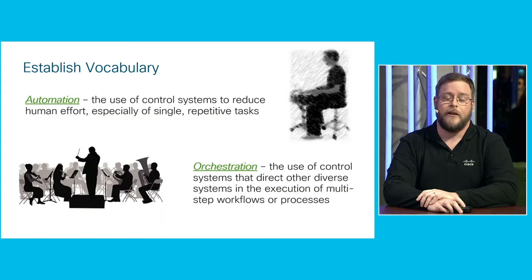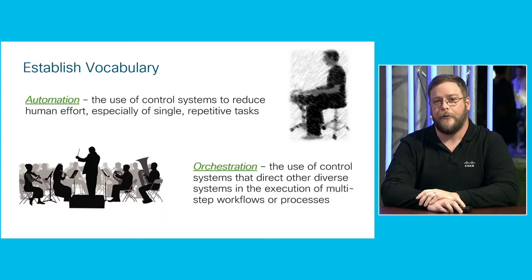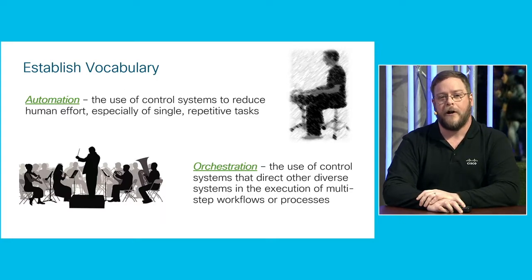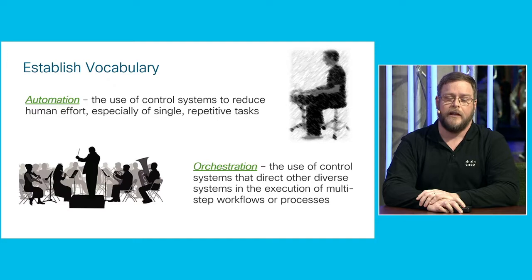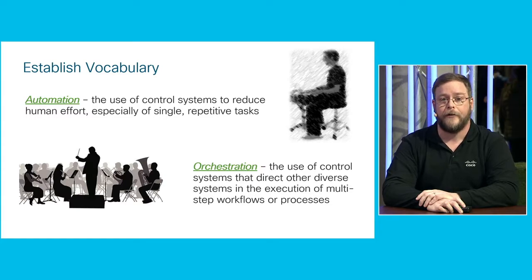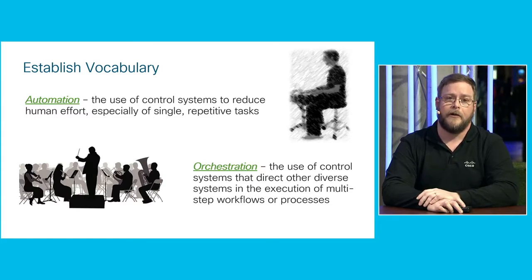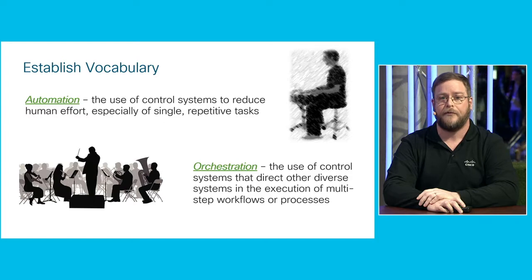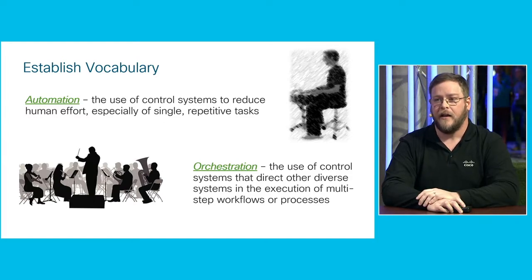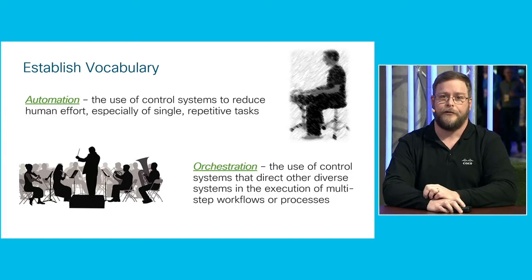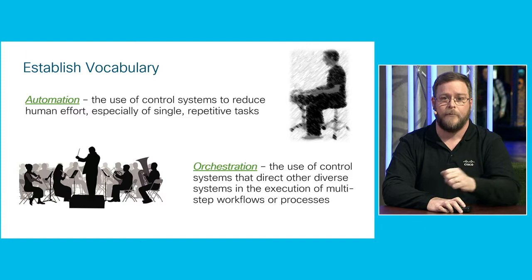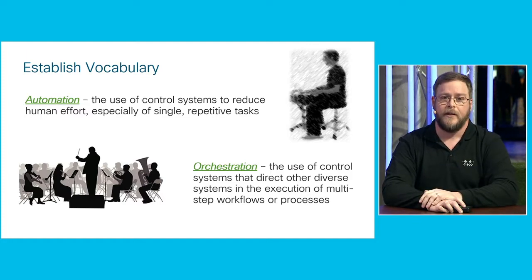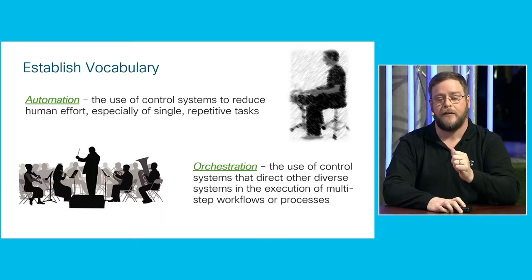We need to establish a common vocabulary, because a lot of people talk about automation and orchestration the same way. Automation is the use of control systems to reduce human effort, especially for single or repetitive tasks. An example might be: I need to register a DNS host name, or I need to ask for the next available IP address. These are single tasks that can be automated.